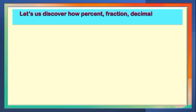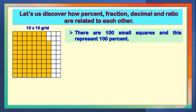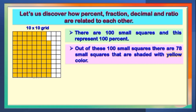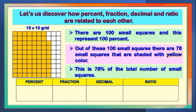Now let us discover how percent, fraction, decimal, and ratio are related to each other. I have here a 10 by 10 grid. There are 100 small squares and this represents 100%. Out of these 100 small squares, there are 78 small squares that are shaded with yellow color. This is 78% of the total number of small squares. Let us put this into a chart or table to see the relationship of percent, fraction, decimal, and ratio.